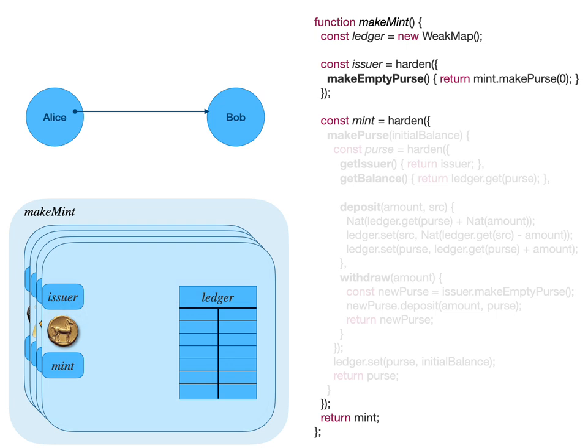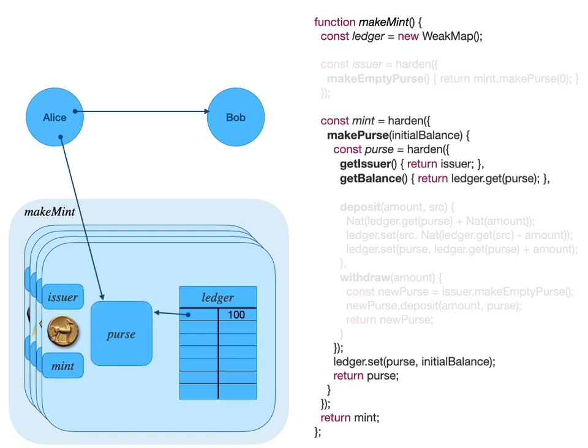Invoking makeMint a few more times — each of these planes is a separate logical currency, a separate currency system, each isolated from the other. With the currency on top — which we'll call bucks — we can invoke the mint object to create a purse. We create a purse with 100 bucks to give to Alice as the initial conditions, and again to create a purse with 200 bucks to give to Bob. Every time we call purse, it creates a purse object and then registers the purse in the ledger with the associated value being the initial balance.